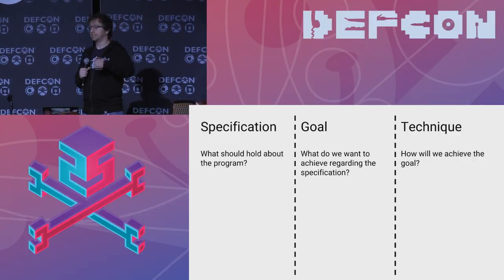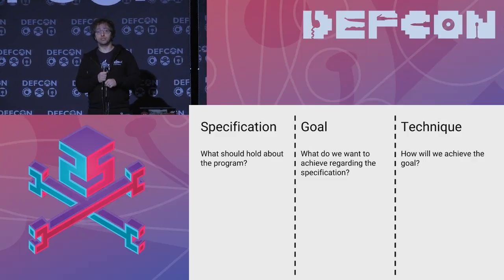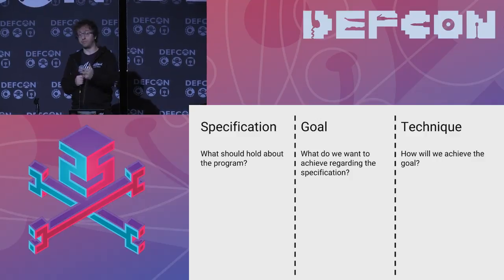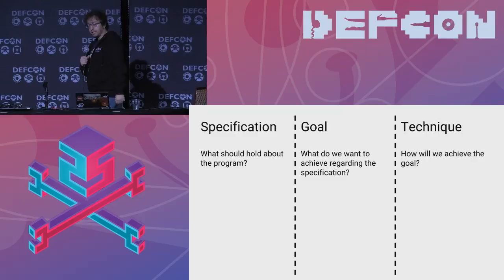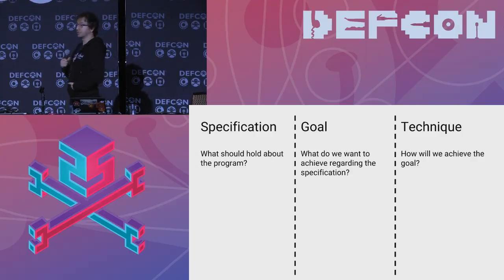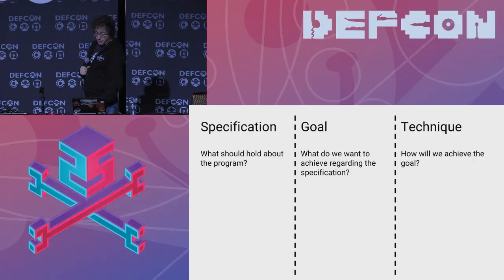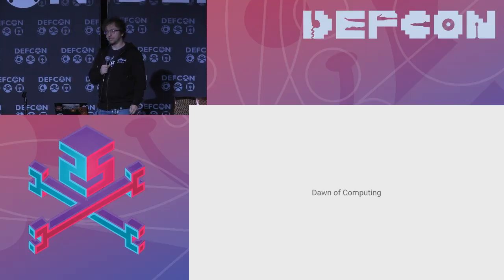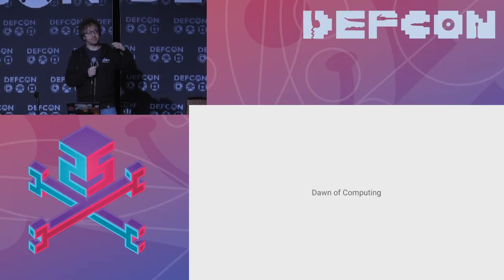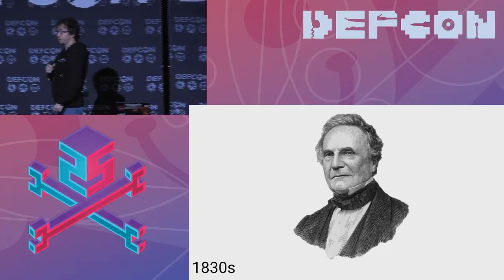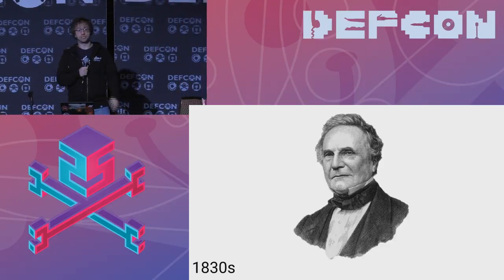You have a goal to achieve with that specification. For example, if your specification is that you don't want this to crash, you could say you want to make sure that specification always holds — or you might want to say the specification does not hold, you want to find the crash. So: are you looking for bugs, or are you trying to make sure things are safe? Once you decide what you want to do, you need to decide how — what technique you'll use to reason about a specification on your program. With these three categories in mind, I'm going to run you through the history of program analysis.